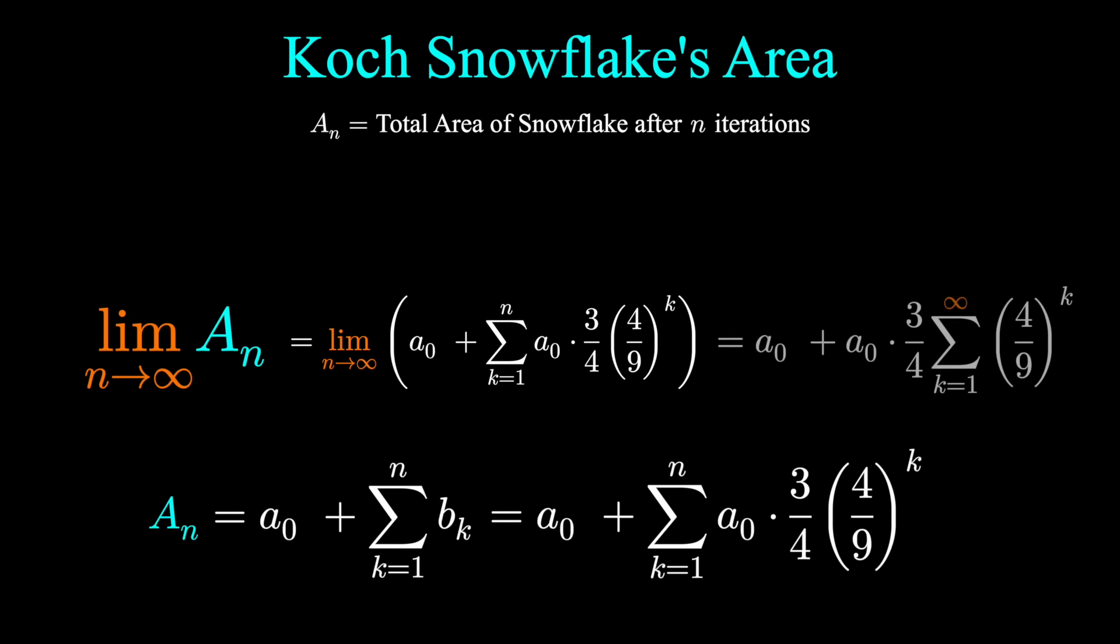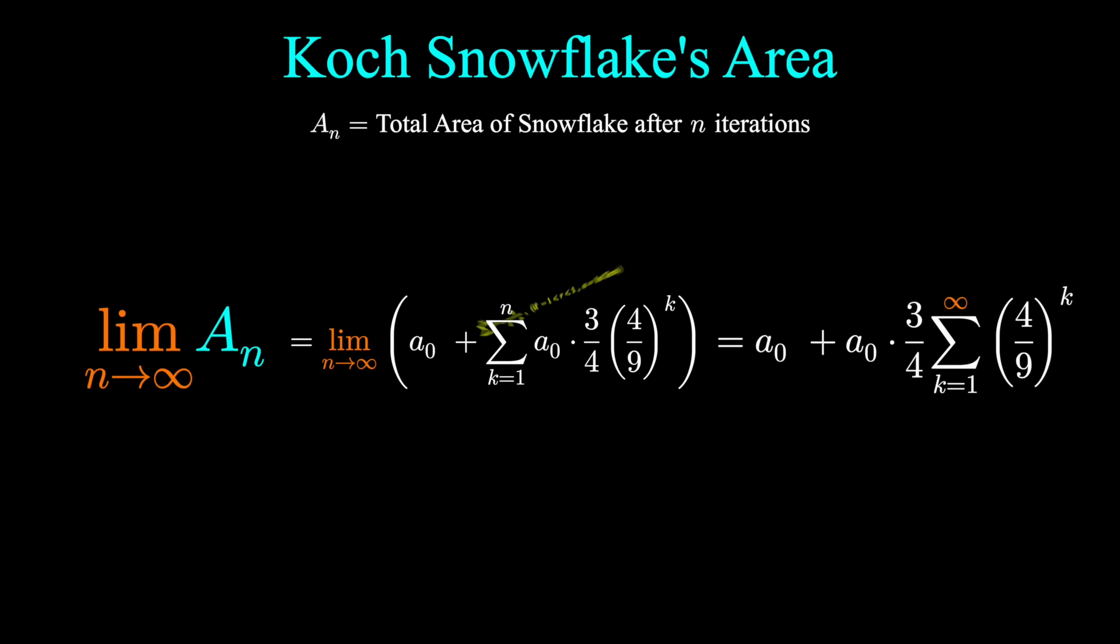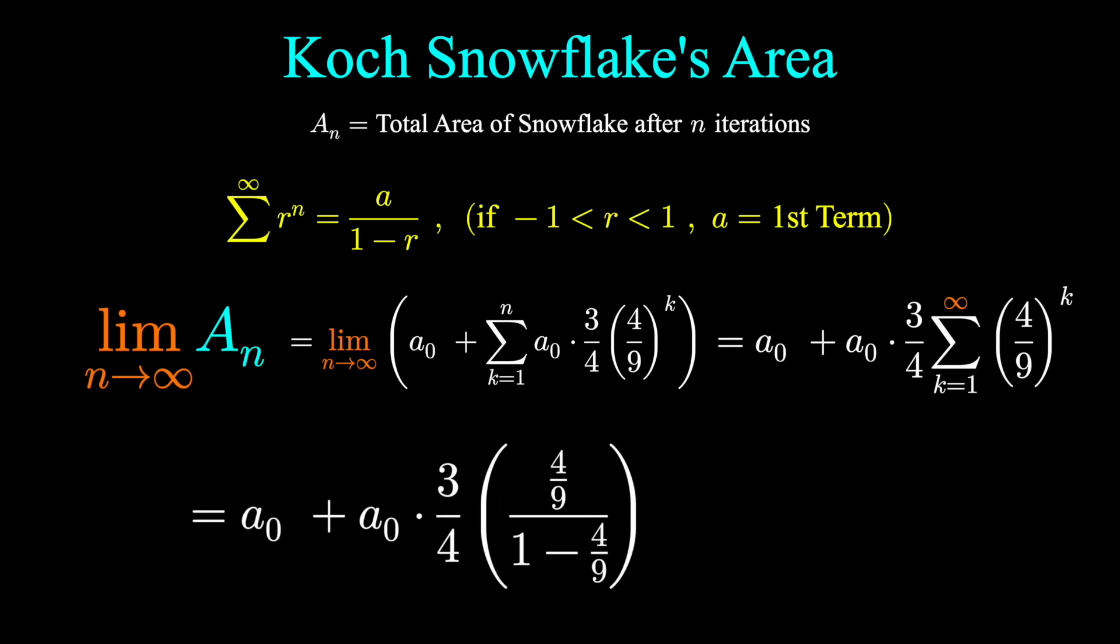And so what we have here is an infinite series. This is something that you would probably come across in Calc 2. This series is what's known as a geometric series, and it has a very nice formula that gives us its result, so long as the base in absolute value is strictly less than 1. Here the base is 4 ninths, so it's all good. Just plugging this into the formula, doing a little bit of algebraic number crunching, we get our answer.